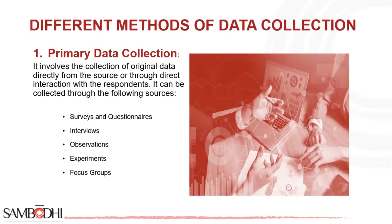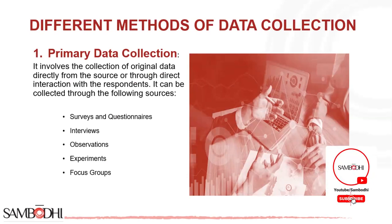Different types of data or methods of data collection. Primary and secondary data collection are the two approaches used to gather information for research and analysis purposes. Let's explore each method in detail. Primary data collection involves the collection of original data directly from the source or through direct interaction with respondents. This means the researcher meets the respondent and directly collects the data, allowing researchers to obtain first-hand information specifically tailored to their research objectives.